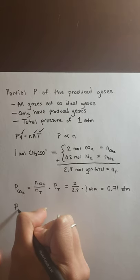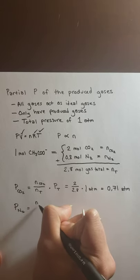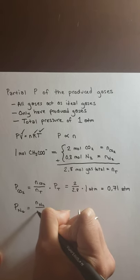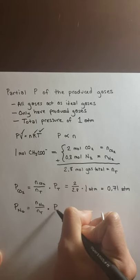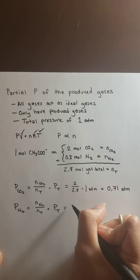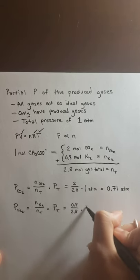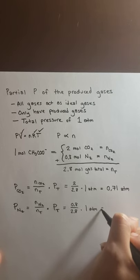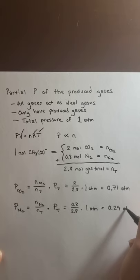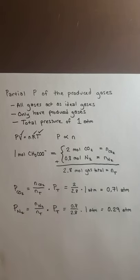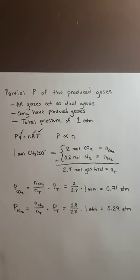For nitrogen, the partial pressure of N₂ equals (n_N₂ / n_total) × P_total = (0.8 / 2.8) × 1 atm = 0.29 atmospheres. And that completes our denitrification example.